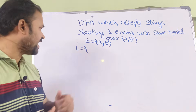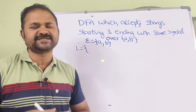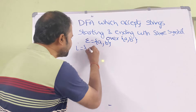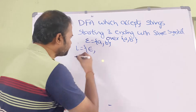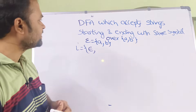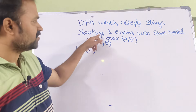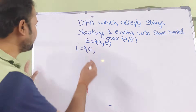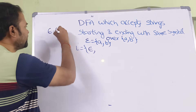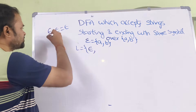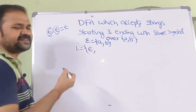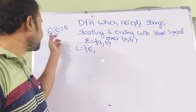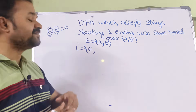Now let us see the language. A language is a collection of strings. Here the minimum possible string is epsilon, because the constraint is that the string starts and ends with the same symbol. Since epsilon concatenated with epsilon is epsilon, the string starts and ends with epsilon — so epsilon satisfies the constraint.